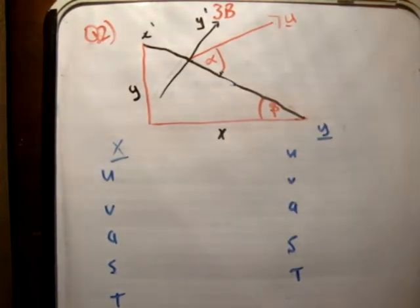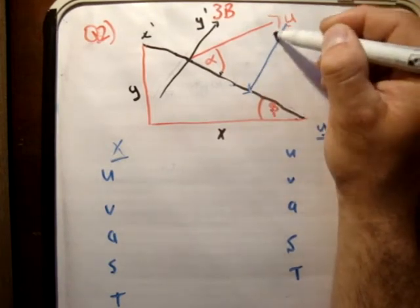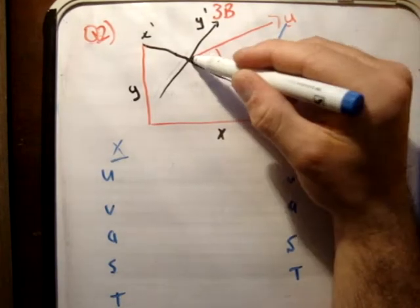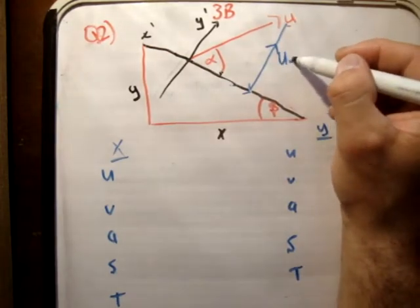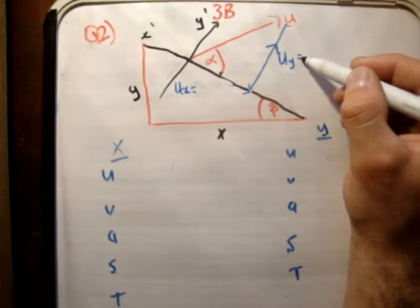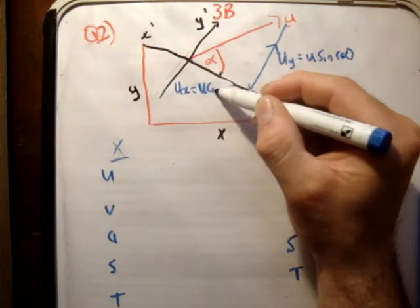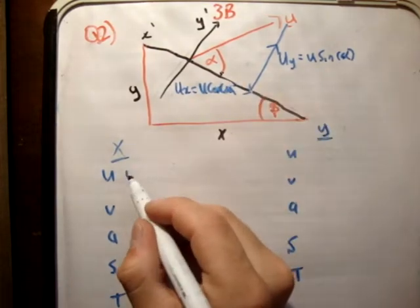So of course, when we're resolving this, we want the two vectors to be parallel to the x prime, y prime axes. This vector is u sub y. This vector here is u sub x. This is equal to u sine alpha, u cos alpha. So just note that.